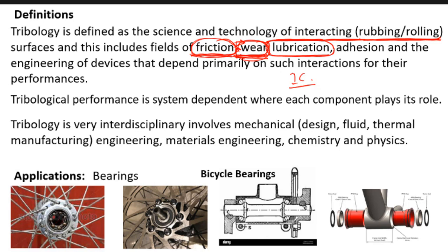So we understand that friction is something to be controlled — sometimes reduced, sometimes increased to an optimum value. Wear in most cases is to be reduced, but there are also cases where wear should be increased or brought to an optimum level. For example, cutting, milling, polishing, and grinding are manufacturing processes which depend on wear of the material. Lubrication is a very complex thing, and how we do lubrication we have to understand.